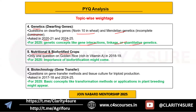The fifth topic is nutritional and biofortified crops. Only one question — on golden rice, which is rich in vitamin A — was asked in 2018. This might be a less emphasized area, but with the growing importance of biofortification it could resurface. However, it's not a high-priority subtopic based on past trends.